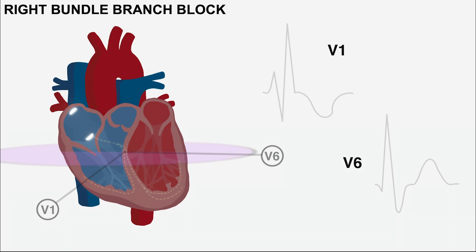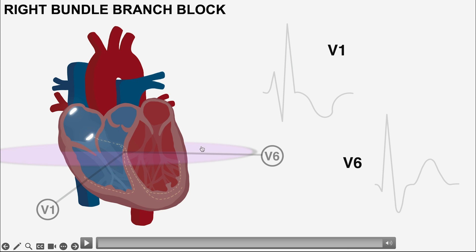In bundle branch blocks we primarily look at leads V1 and V6. This is because V1 is mainly looking at the right side of the heart whilst V6 mainly looks at the left. This is what a right bundle branch block would look like.